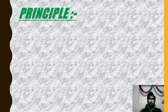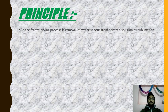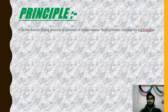The basic principle of the freeze-drying process is the removal of water vapor from the frozen solution by sublimation. This means water removal from any substance by the supply of heat. Sublimation means converting from solid state directly to the gas phase.